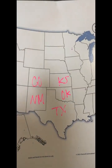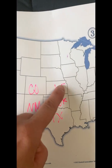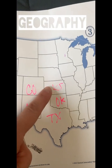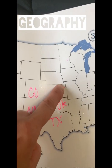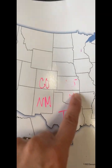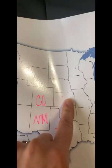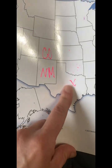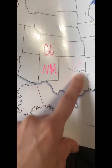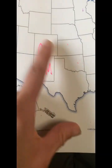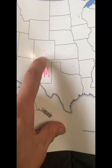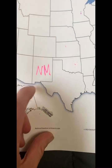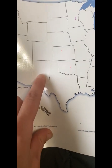State capitals: Topeka, Kansas. Oklahoma City, Oklahoma. Austin, Texas. Denver, Colorado. Santa Fe, New Mexico.